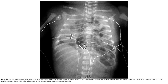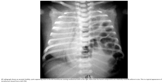AP radiographs immediately after birth show a large left congenital diaphragmatic hernia with numerous round with bowel loops filling the left hemithorax and extending across the midline. The UVC, which is in the upper right atrium, is displaced to the right. The endotracheal tube is large at the gastrointestinal level. AP radiographs of an aerated, properly cystic artery mass in the left hemithorax causing mediastinal shift to the right. Note that the lucent components are relatively round and uniform in size. This is a typical appearance of intrathoracic bowel from the left congenital diaphragmatic hernia.